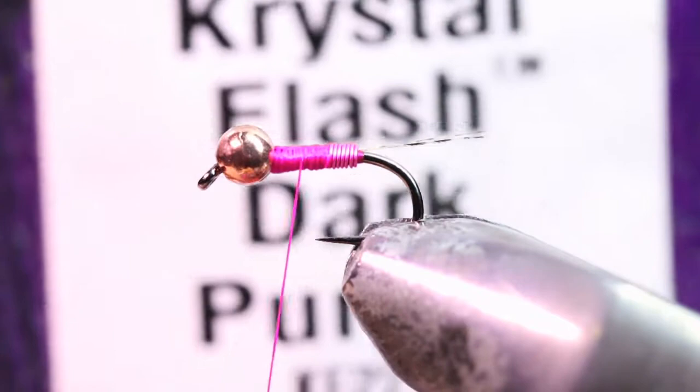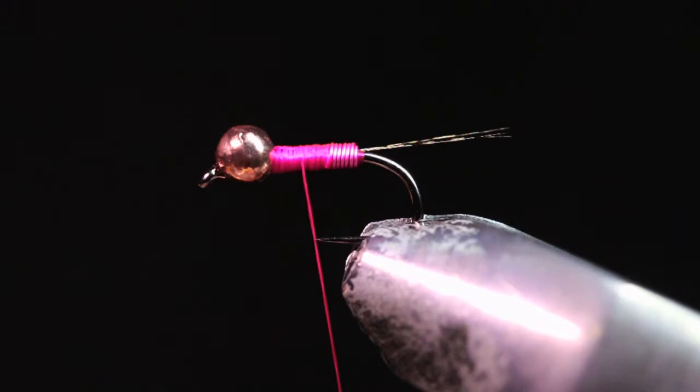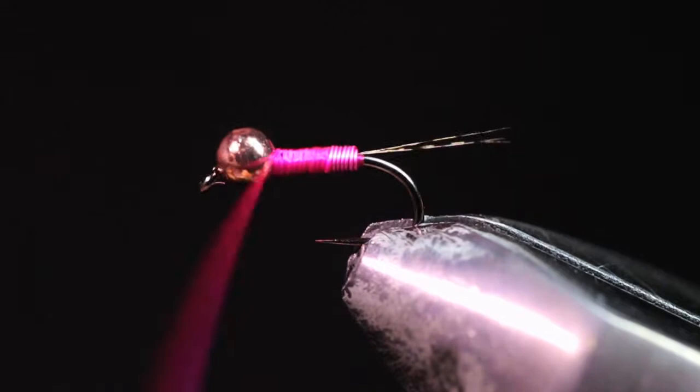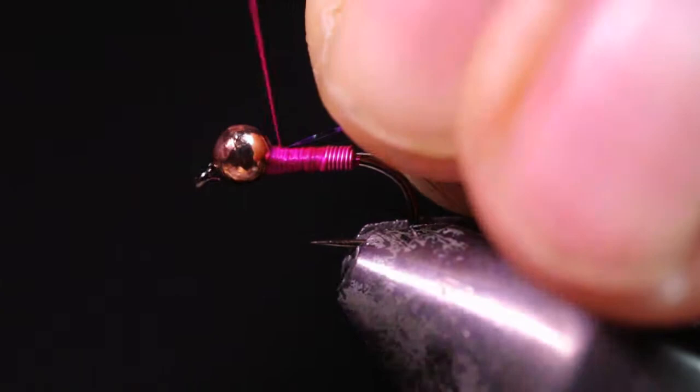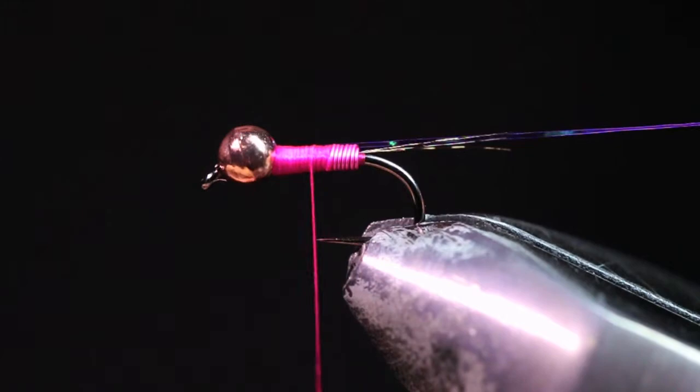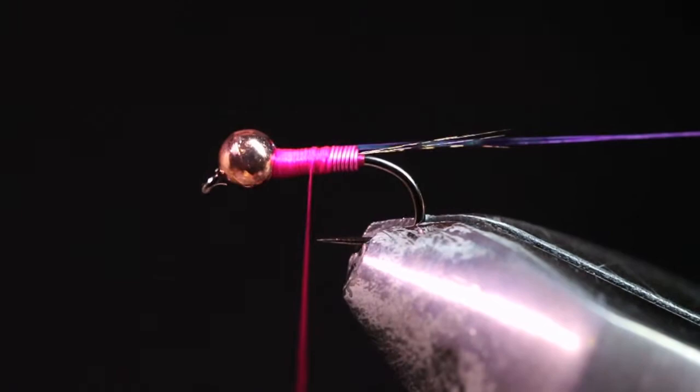Now for our ribbing we're going to be using some crystal flash. This right here is dark purple. And I'm just going to grab one strand. And I'm going to do the exact same thing as I did with the wire. So I'm just going to stick this in the back of this bead. And bring this down to where my wire ended.